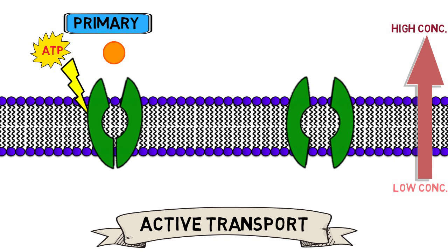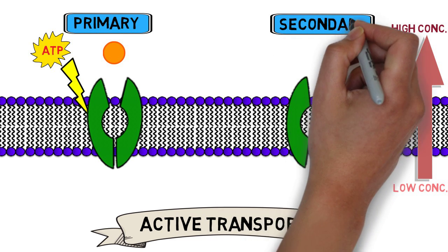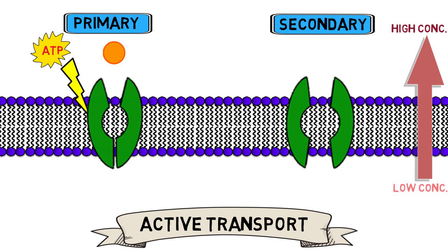Another type of active transporters are classified as secondary active transporters, where the input energy is derived from the potential energy stored in a secondary molecule's concentration gradient. In other words, as this secondary molecule moves along its concentration gradient, energy is released, and this energy is tapped by the molecule that needs to move across the cell membrane, giving it that extra push to move against its own concentration gradient.